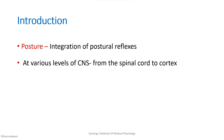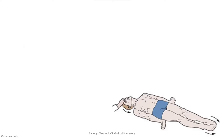Decorticate and decerebrate rigidity are specific involuntary postures a person assumes when there is a lesion in the brain stem. That is why in the introduction we write about what is normal — how a normal posture is actually maintained. Posture is maintained by an integration of different postural reflexes occurring at various levels of the central nervous system, right from the spinal cord to the cortex.